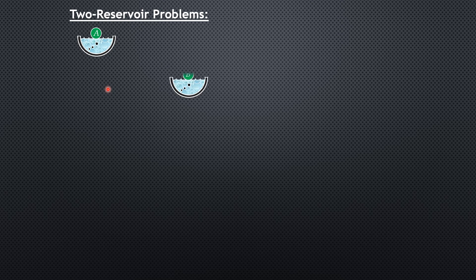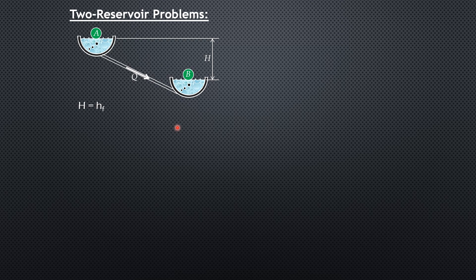Let's have the two-reservoir problems. Without a machine, the flow will be by gravity, therefore the flow direction would be from the higher reservoir to the lower reservoir. The difference in water surface elevation is denoted by big H, and that big H equals the frictional loss if minor losses are neglected. Considering all losses, the energy equation gives H as the sum of the frictional losses and the minor losses.